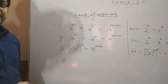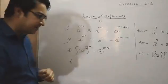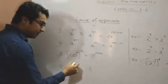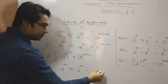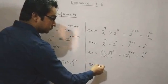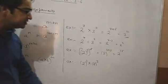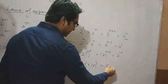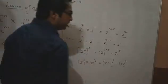Now see the fourth law of exponent. The fourth law is: when the bases are different, that is a and b, but the powers are same, that is m and m, and there is a multiplication between them — we multiply the bases and write the power one time. For example, 2 raised to the power 3 multiplied by 5 raised to the power 3: both powers are same but bases are different, so we get 10 raised to the power 3 as the required answer.